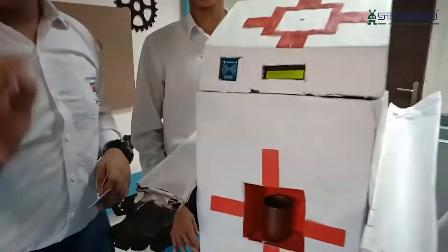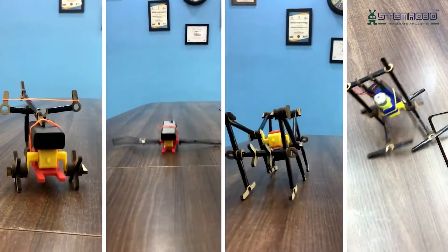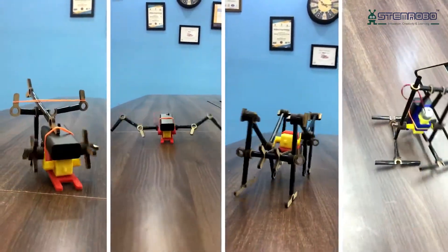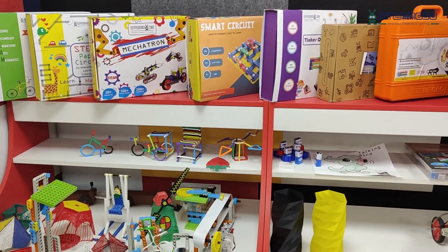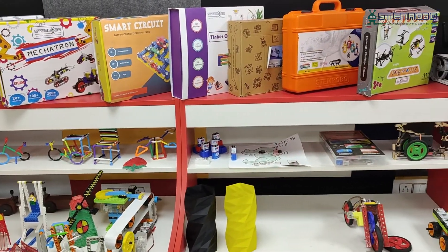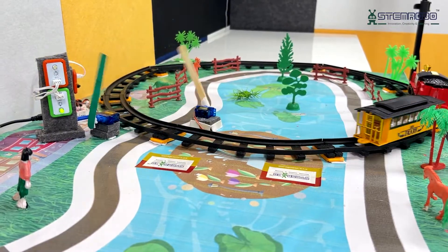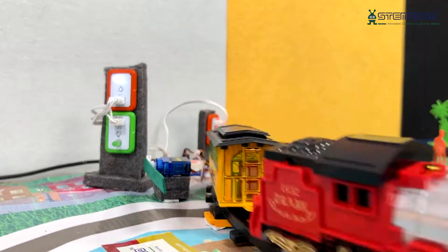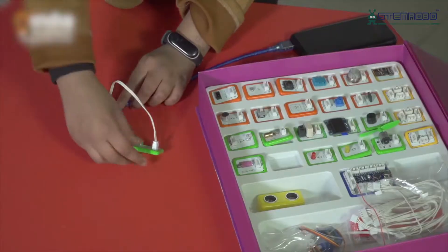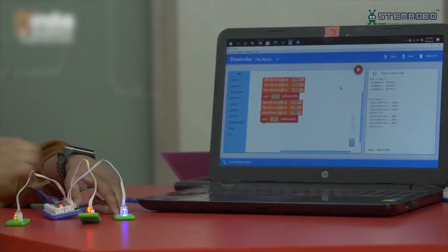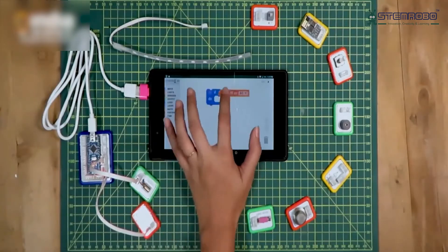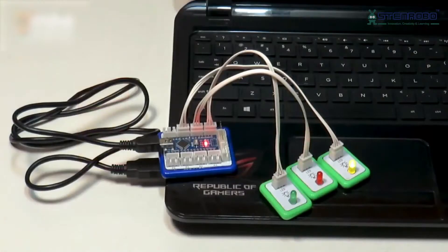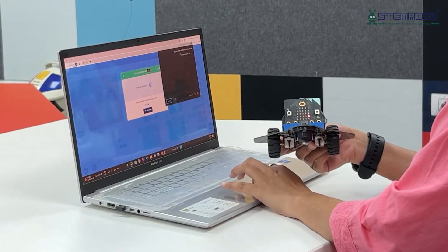STEM Robo offers a diverse array of DIY kits, each tailor-made to engage children and instill a sense of wonder, imagination, creativity, and logical reasoning. For instance, our Tinker Orbits DIY activity kit serves as an educational gateway to the world of electronics and graphical programming.